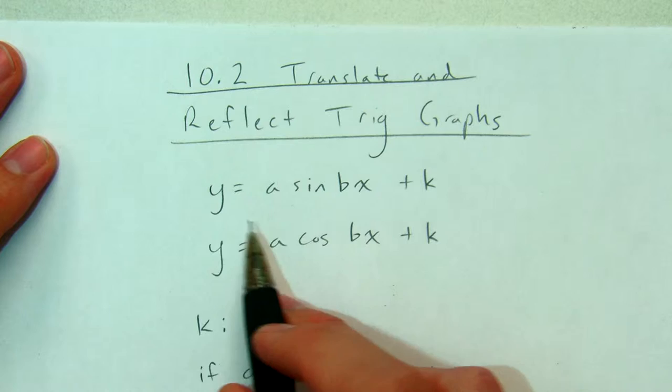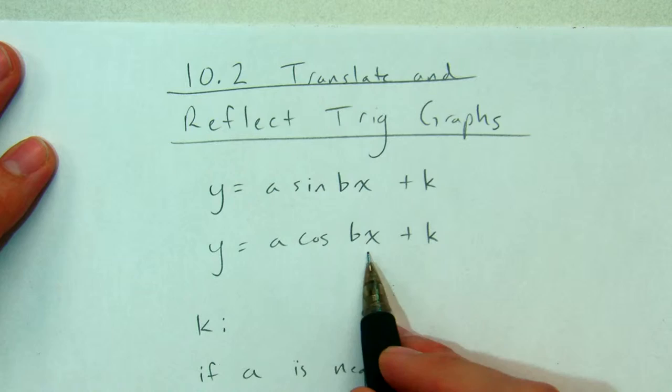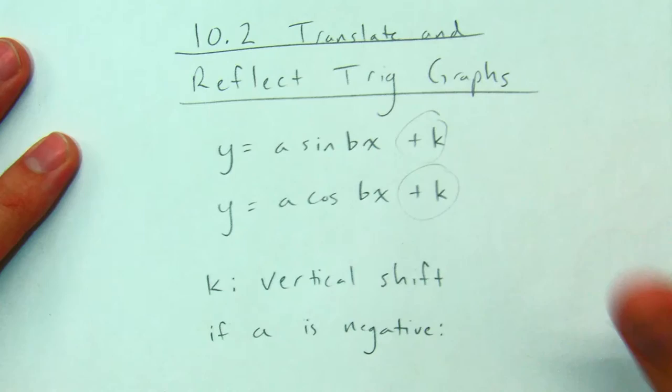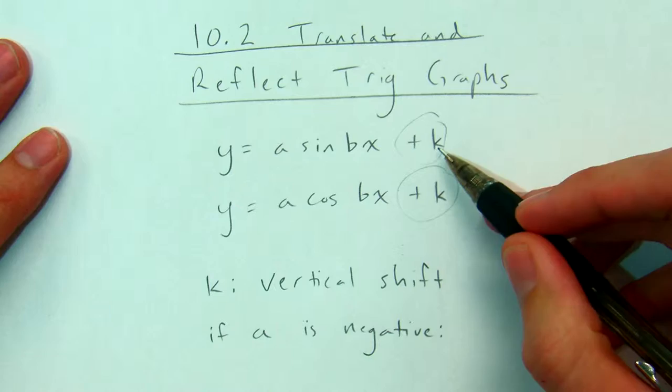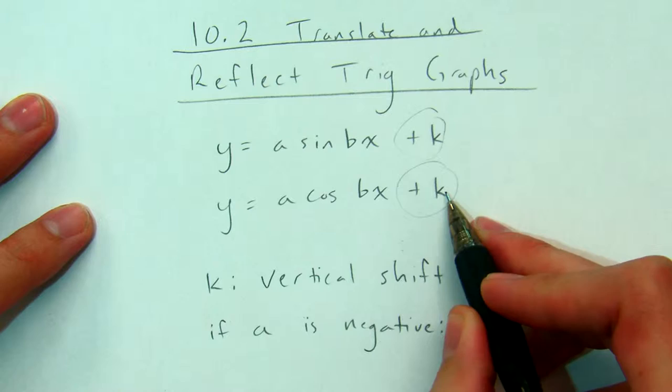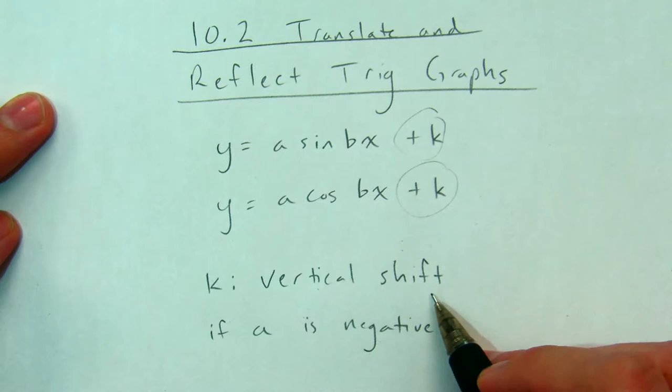Okay, so we're familiar with y equals a sine bx from section 10.1 and a cosine bx. But now we've also got this plus k at the end. That k is a vertical shift. So if I see y equals 5 sine 3x plus 7, I know that my whole graph of y equals sine x is going to move vertically. It's going to move up 7. Or if I see 2 cosine 1 half x minus 4, I know that whole graph of 2 cosine 1 half x is going to move down 4. It's a vertical shift.